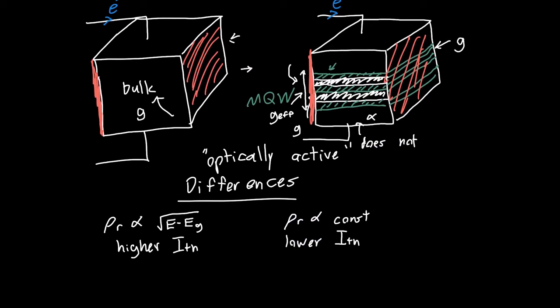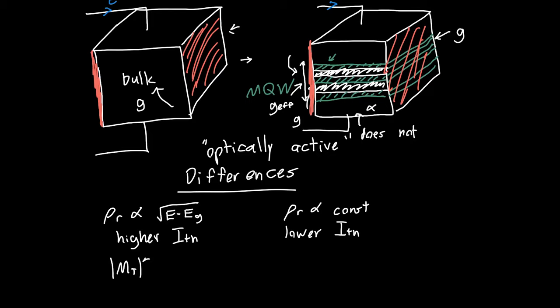And the main differences are really in the underlying physics. So the transition matrix element, which was what determined our absorption coefficient, that was sort of the strength of the interaction between two different energy levels with two different wave functions.